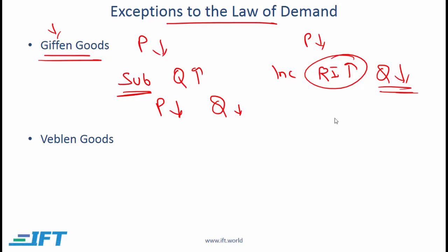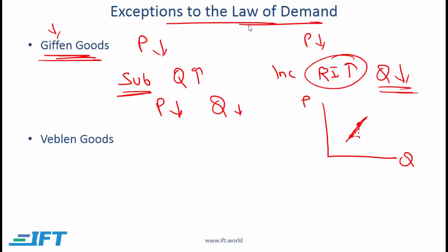If the income effect dominates the substitution effect, a decrease in price also results in a decrease in quantity demanded. Looking at the demand curve with price on the vertical axis and quantity on the horizontal, if price comes down and quantity also comes down, we get a positively sloped demand curve. For Giffen goods: key point one — it's an inferior good where the income effect dominates the substitution effect; key point two — it has a positively sloping demand curve, which is an exception to the law of demand.